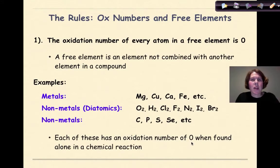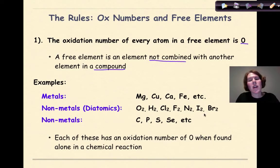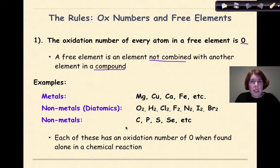The oxidation number of every atom in a free element is 0. A free element is defined as an element not combined with another element in a compound — it's free-standing, alone, by itself. Examples for metals include magnesium, copper, calcium, and iron. For non-metals, these include the diatomics: oxygen, hydrogen, chlorine, fluorine, nitrogen, iodine, and bromine. Other non-metals that are not diatomics include carbon, phosphorus, sulfur, and selenium. Each of these will have an oxidation number of 0 when found alone in a chemical reaction.